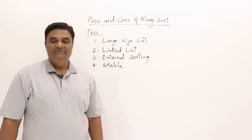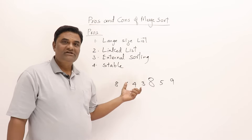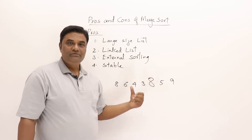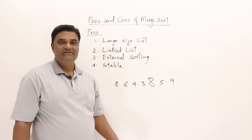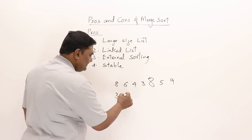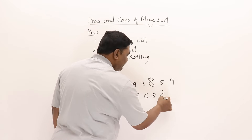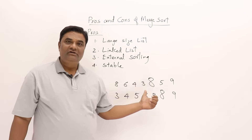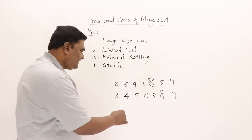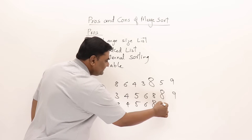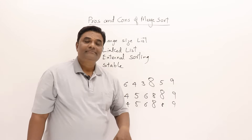Merge sort is stable. If I have a list with duplicates — say 8 appears twice — I mark the first 8 and the second 8. After sorting, the result should be: 3, 4, 5, 6, first-8, second-8, 9. The order of duplicates is maintained. We do not get them swapped — the first 8 stays before the second 8.